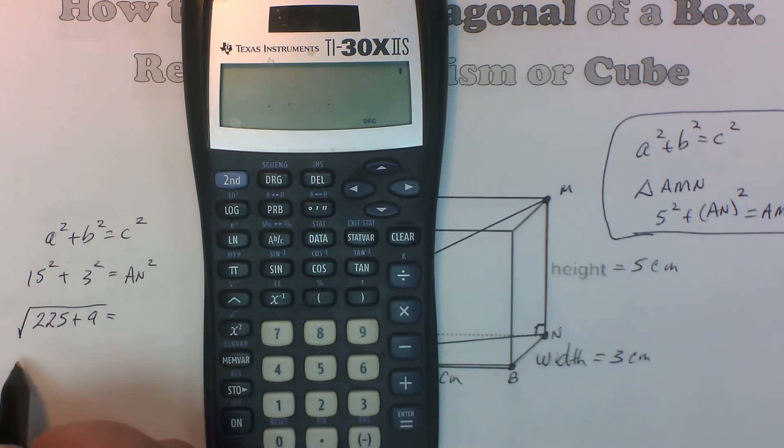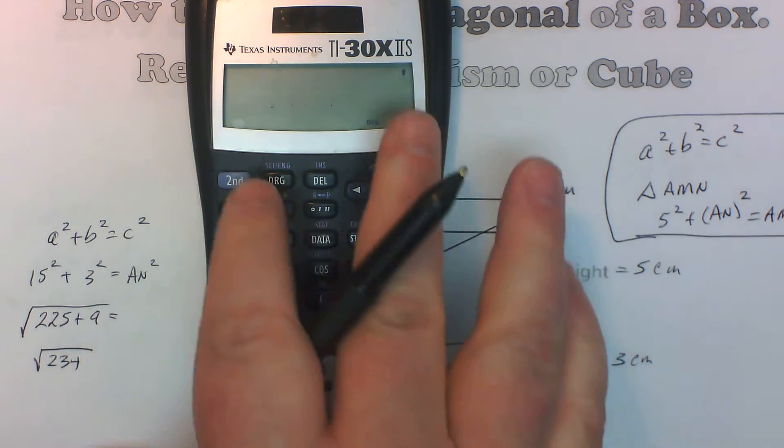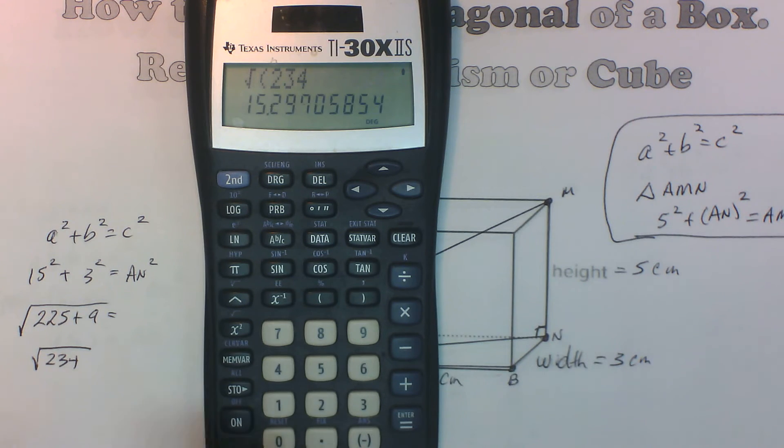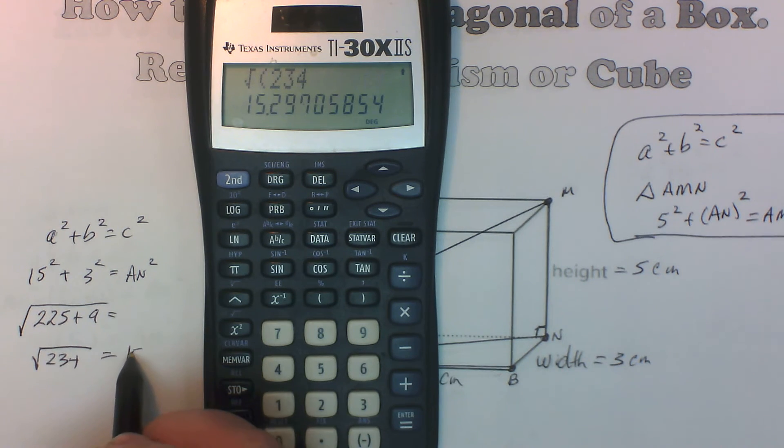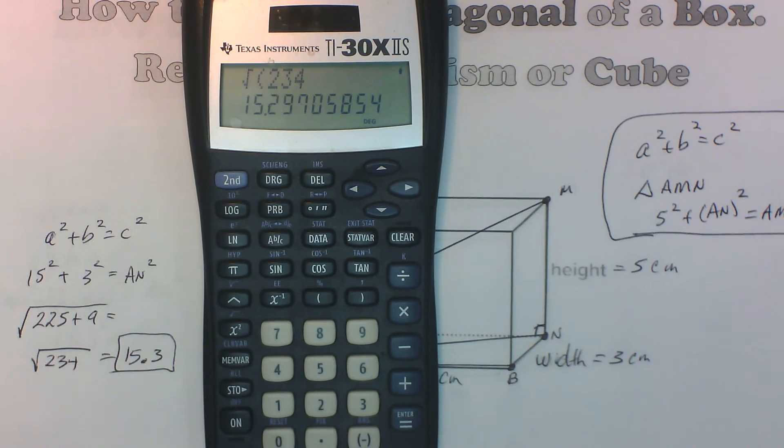There we go. So this is going to be the square root of 234. We're going to round to 3 significant figures. So there we go.